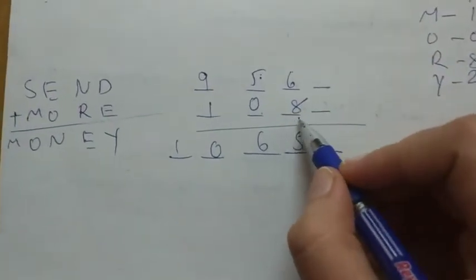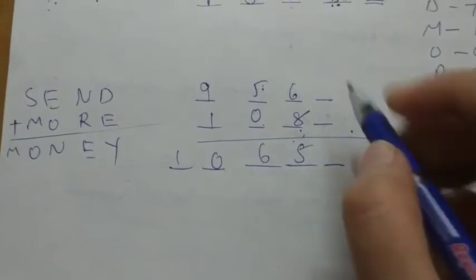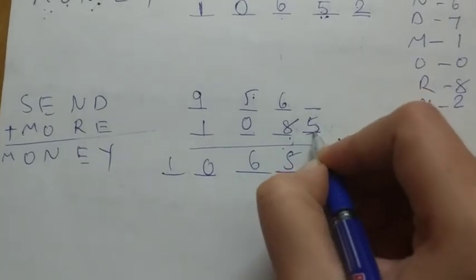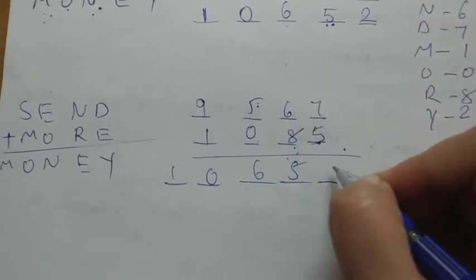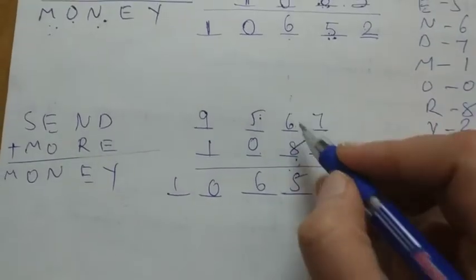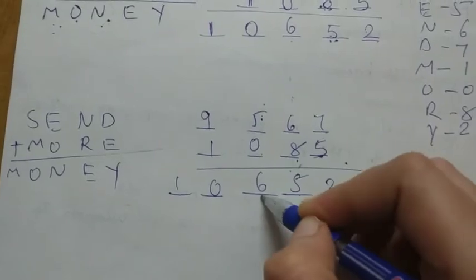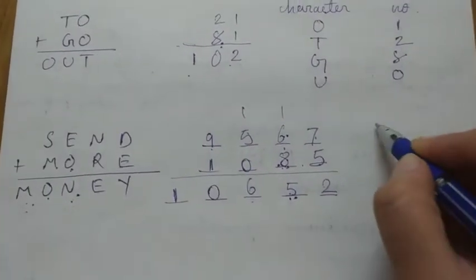Now the sum is 14, so again we have to generate a carry from here. E equals 5, and to generate carry I am assigning D equals 7. So it will be 12 - 2 carry 1, sum will be 15 - 5 carry 1, and then sum will be 6.